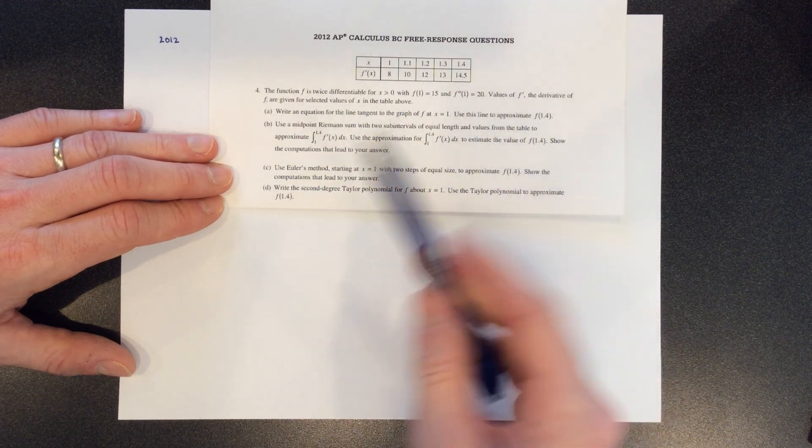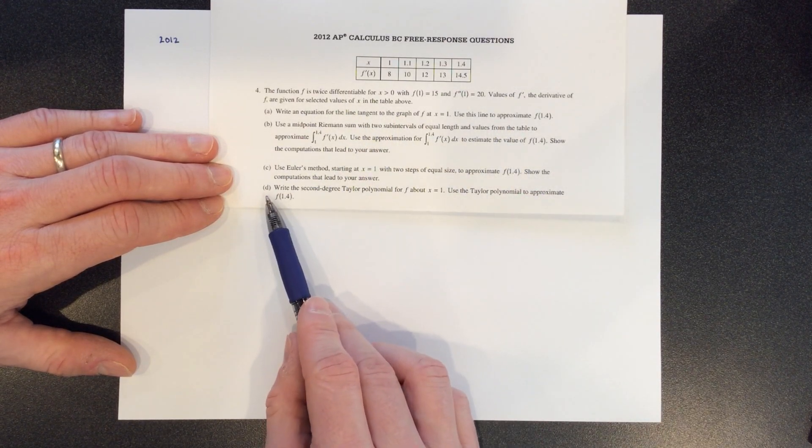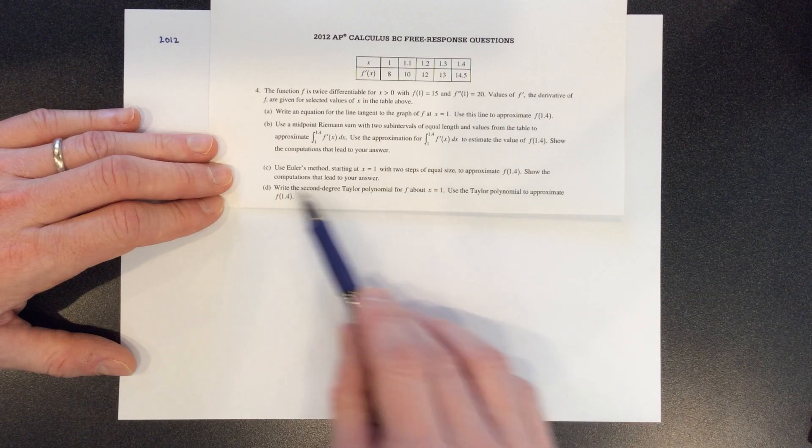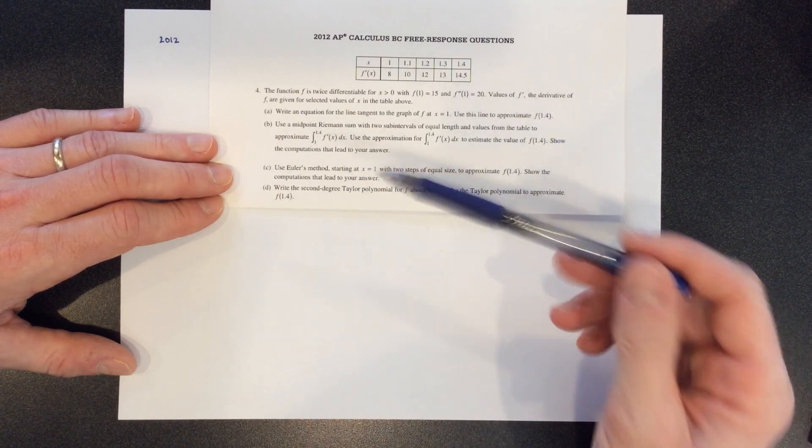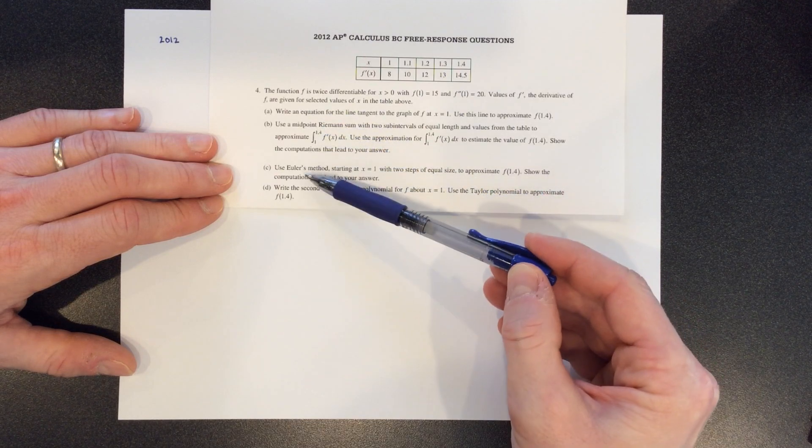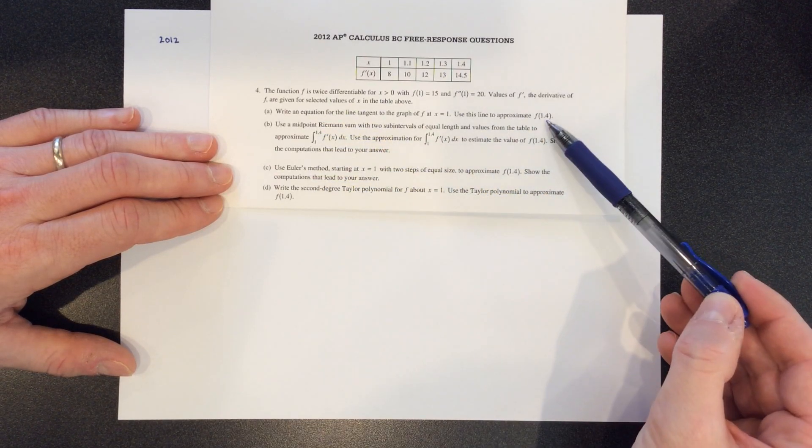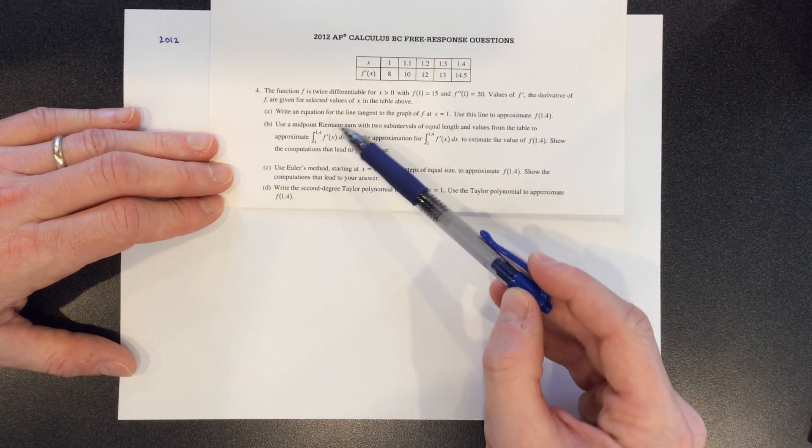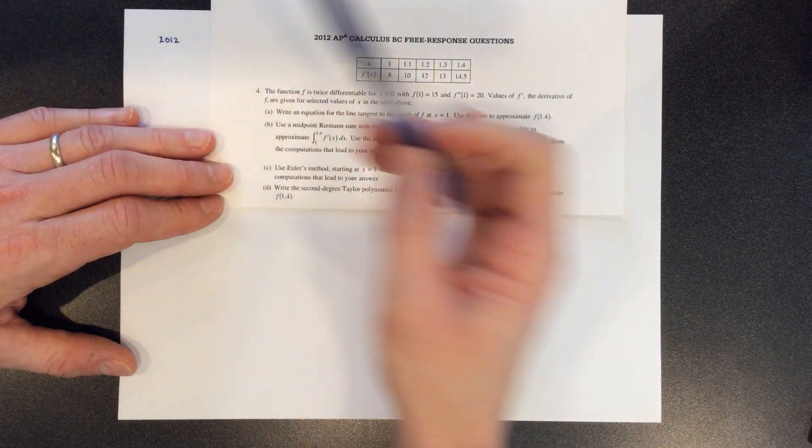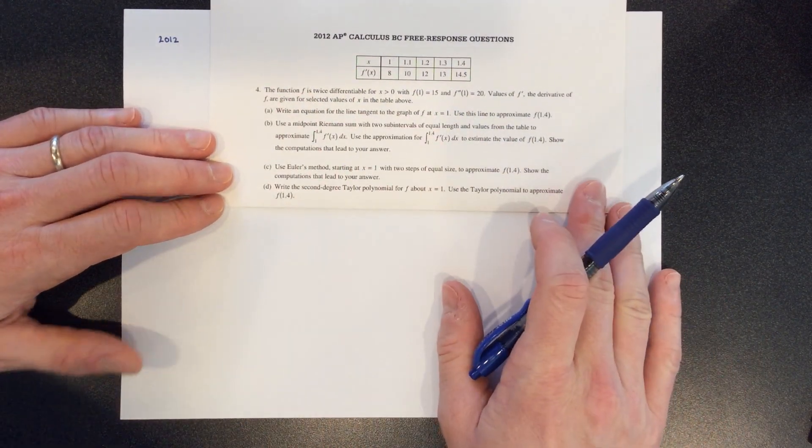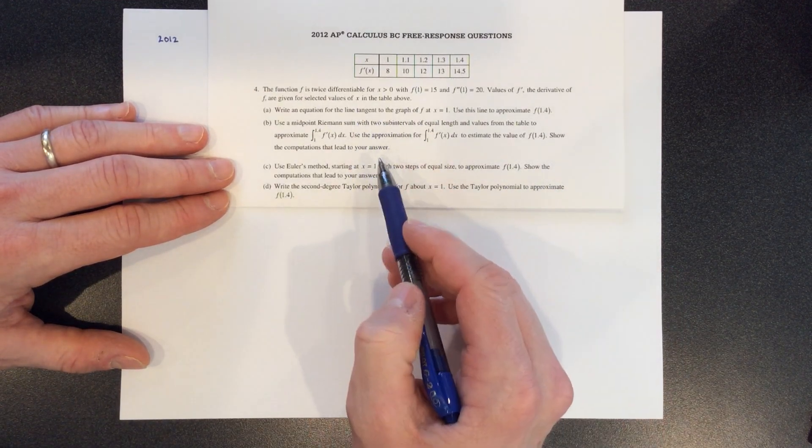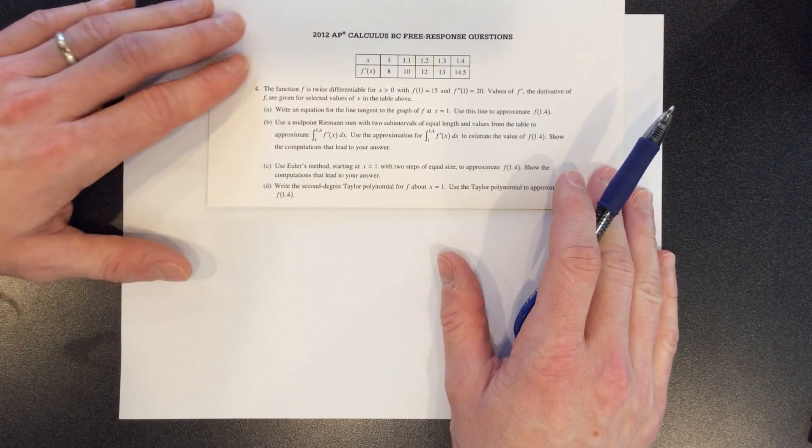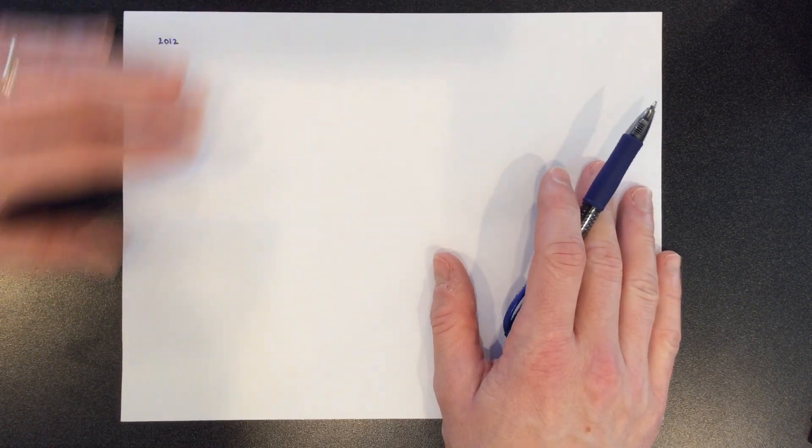The first one is an equation on a tangent line which we now know as the first order approximation, and then part D is really the Taylor specific one where it asks us to write a second degree Taylor polynomial and use it to approximate f of 1.4. The whole point of this one is that they're giving you four different methods to all approximate f of 1.4. So tangent line approximation, quadratic approximation, Euler method approximation, and then a Riemann sum approximation. So I really do like this question in terms of how much calculus it has. Feel free to take a screenshot of it. I'm not going to have the ability to keep the data table on the whole time.